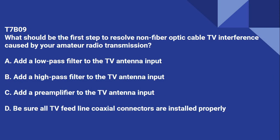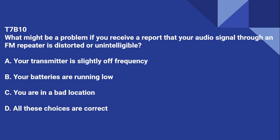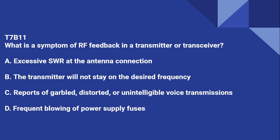T7B08: What should you do if something in your neighbor's home is causing harmful interference to your amateur station? All of the above — work with your neighbor to identify the offending device, politely inform your neighbor that FCC rules prohibit the use of devices that cause interference, and make sure your station meets the standards of good amateur practice. T7B09: What should be the first step to resolve non-fiber optic cable TV interference caused by your amateur radio transmission? Be sure all TV feed line coaxial connectors are installed properly. T7B10: What might be a problem if you receive a report that your audio signal through an FM repeater is distorted or unintelligible? Your transmitter is slightly off frequency, your batteries are running low, or you're in a bad location — all of those are correct.